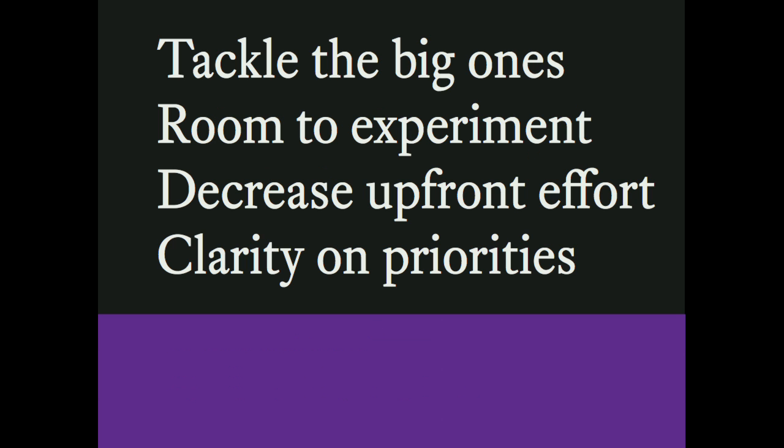The main talking points for today: we need to tackle the big issues — we've avoided them long enough. That means we have to create room to experiment, ideally in Core itself. We need to find ways to lower our standards and play in Core so that we can test new things. In order to do that, we have to decrease our upfront design effort, decrease our upfront development effort, and get more clarity on priorities so that the things we're working on will actually land in Core.